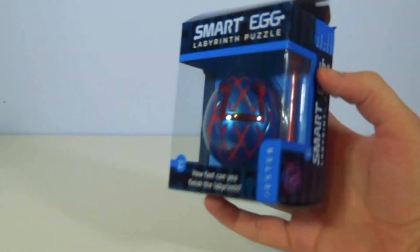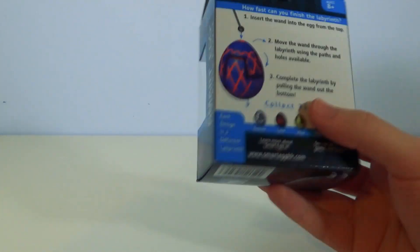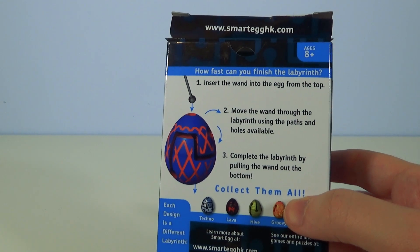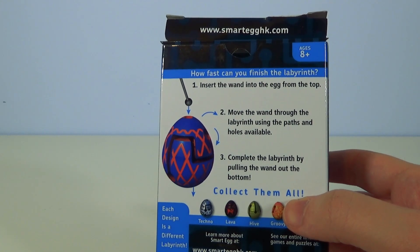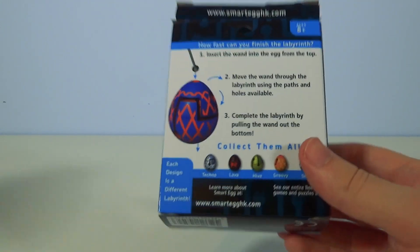Which is a- I don't know how you do this thing. How fast can you finish the labyrinth? I don't know. Let's read the back. Insert the wand- Oh, there's an instructor. Insert the wand into the egg from the top. Move the wand through the labyrinth using the available paths and holes available. Complete the labyrinth by pulling the wand out of the bottom. Okay.